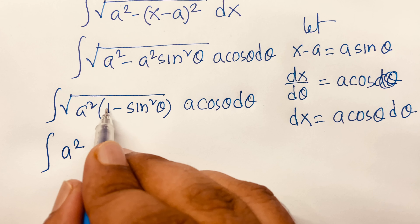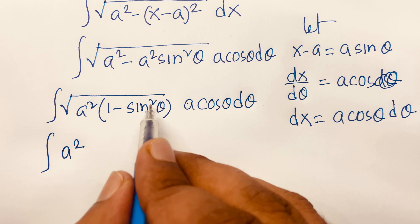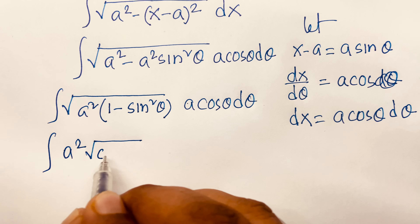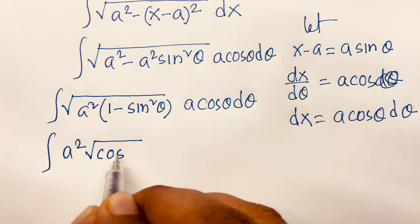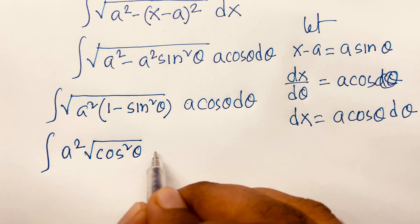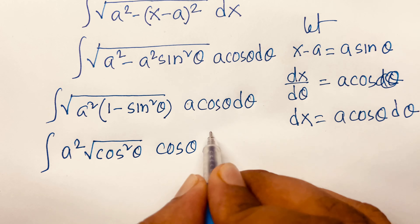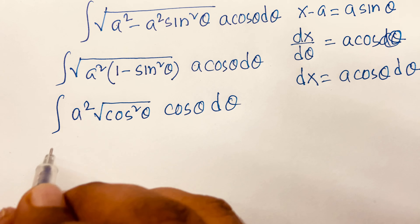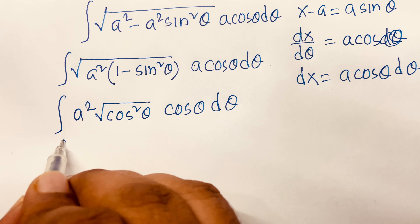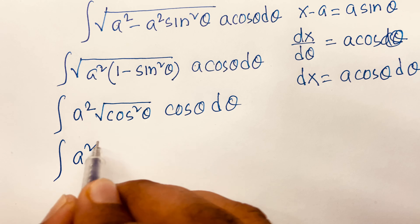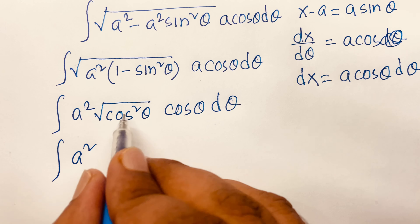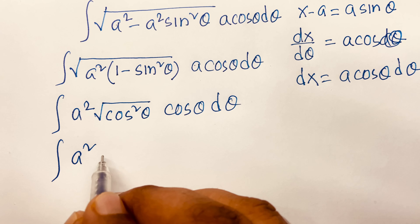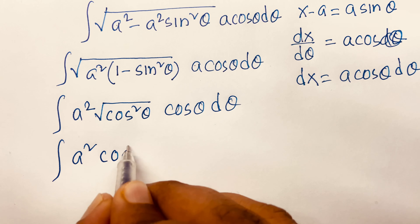Then I can write the integral of √[ a² − (x − a)² ] · dx. Since x − a = a sinθ, we have (x − a)² = a² sin²θ, and dx = a cosθ dθ.